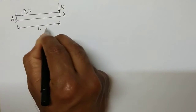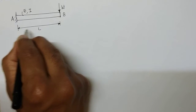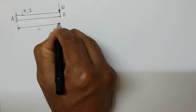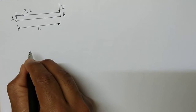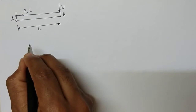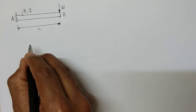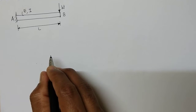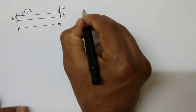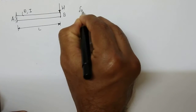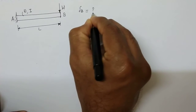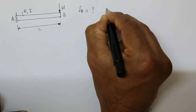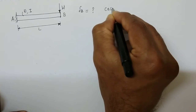What is given: the length of the beam is L, E is the material property that is Young's modulus, and I is the second moment of area of the cross section about the neutral axis. We are asked to find out delta B by using Castigliano's theorem.